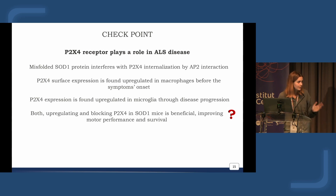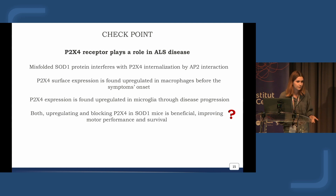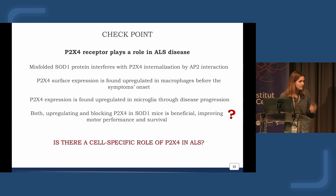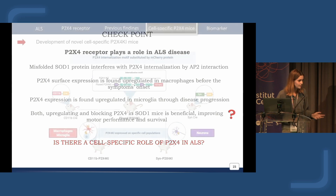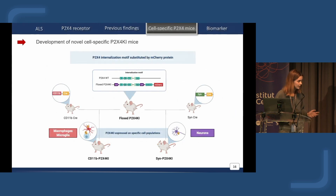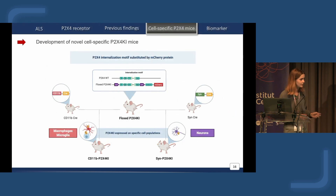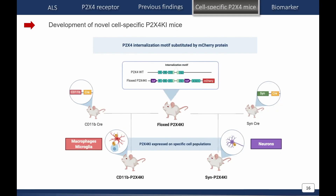We did not understand this paradoxical result at that time and hypothesized the following: is there a cell-specific role of P2X4 in ALS? To answer this question, unfortunately, we need a lot of animal models.